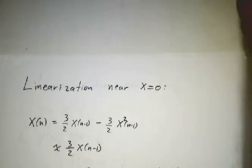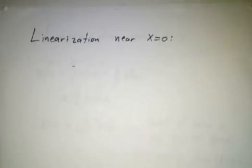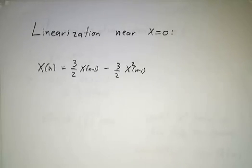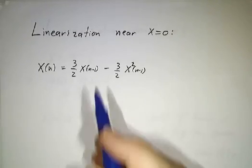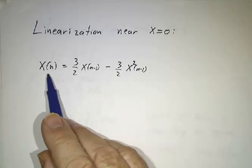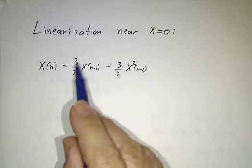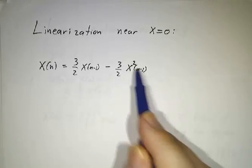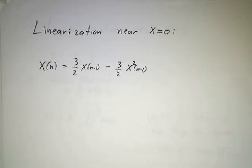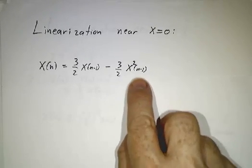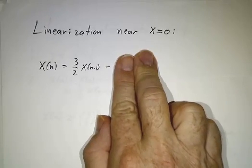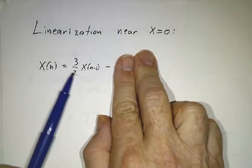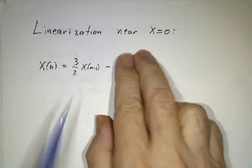So we want to figure out what happens if you start near 0 or what happens if you start near 1 third. If you start near 0, we have x today is 3 halves of x yesterday minus 3 halves of x yesterday squared. And if x is very, very small, then x squared is especially small, and we have that x today is approximately 3 halves of x yesterday.